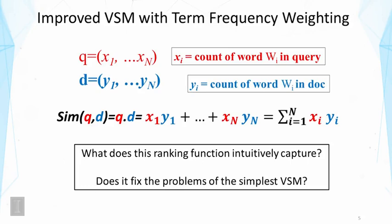They are now the counts of words i in the query and in the document. Now at this point, I also suggest you to pause the lecture for a moment and just to think about how we can interpret the score of this new function. It's doing something very similar to what the simplest VSM is doing. But because of the change of the vector, now the new score has a different interpretation. Can you see the difference? And it has to do with the consideration of multiple occurrences of the same term in a document. More importantly, we would like to know whether this would fix the problems of the simplest vector space model.